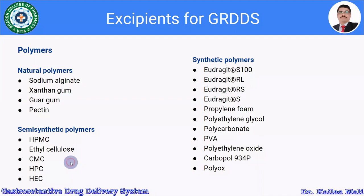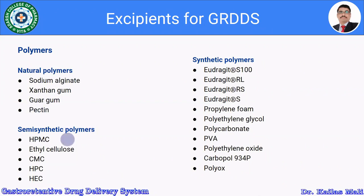To formulate any dosage form it requires certain excipients, and similarly for the gastroretentive drug delivery system we require polymers. These polymers are divided into natural polymers, semi-synthetic polymers, and synthetic polymers. From the natural polymers it is possible to use sodium alginate, xanthan gum, guar gum, and pectin. From semi-synthetic polymers we generally use hydroxypropylmethylcellulose, ethylcellulose, carboxymethylcellulose, hydroxypropylcellulose, and hydroxyethylcellulose.